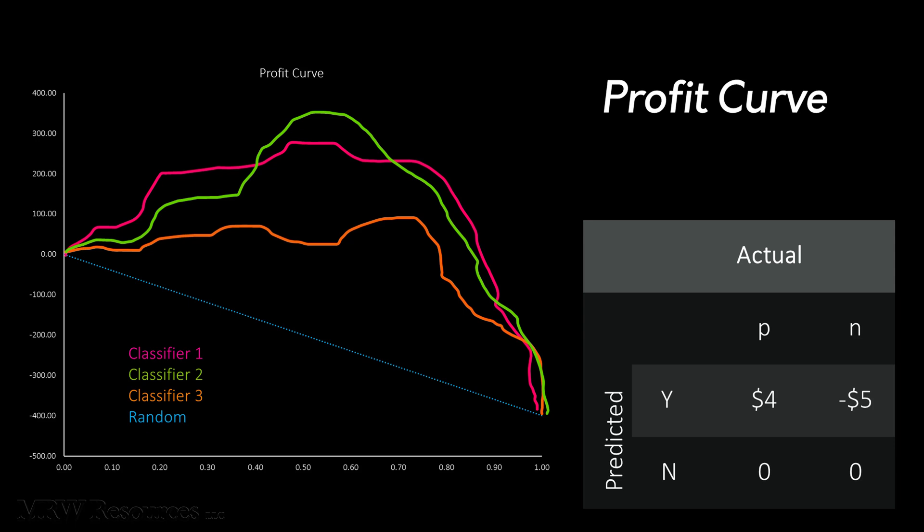So, how do you know which model to choose? Well, if our goal is to maximize profit, which classifier should we use? And how much of the population should we target? As you can see, classifier 2 maximizes all potential profit at a little more than 50% of the population. Therefore,